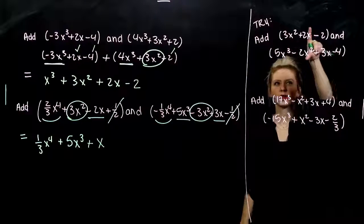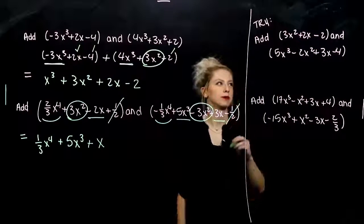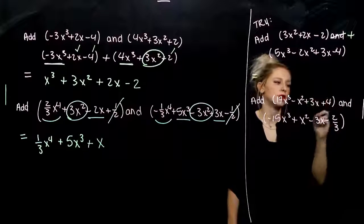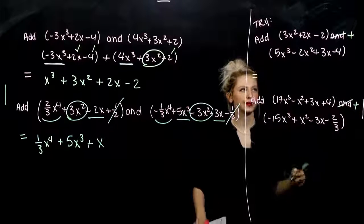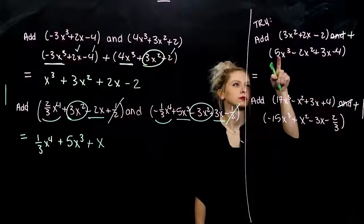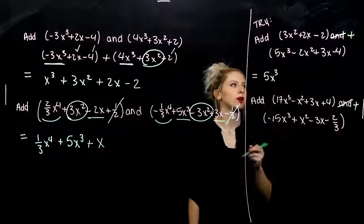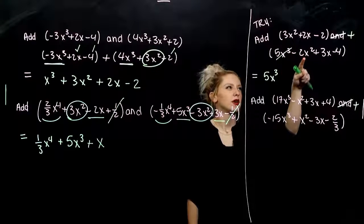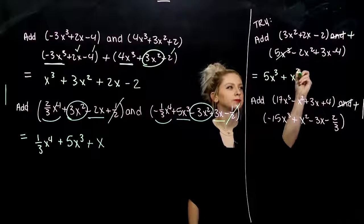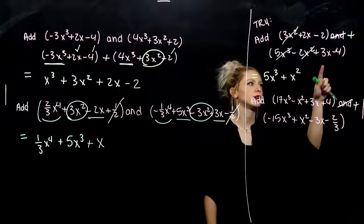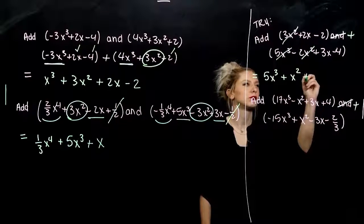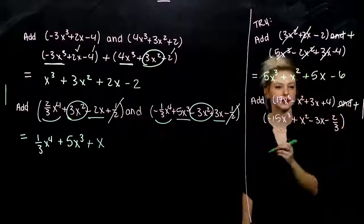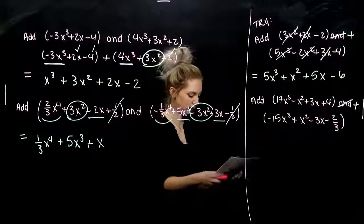Take these next two polynomials and add them. When adding, the parentheses aren't going to matter, so we can look individually at each term. Highest power: 5x cubed comes first. Next, x squared — I have 3 and I'm taking away 2, left with 1. Then x to the first: I've got 3 and I'm adding 2, that gives me 5. And the constants: negative 4 and negative 2 is negative 6. Literally that simple.